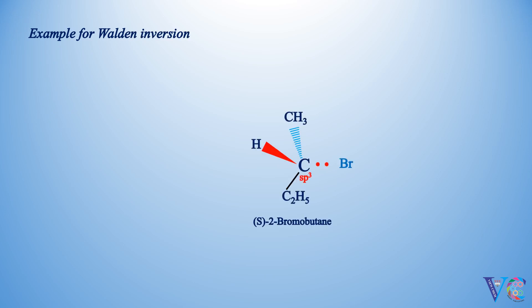Example for Walden inversion: S-2-bromobutane on reaction with hydroxide ion produces R-2-hydroxybutane.